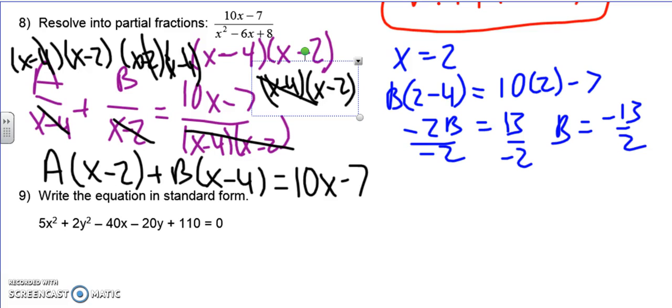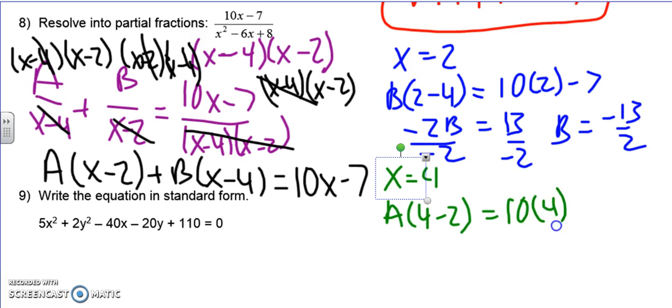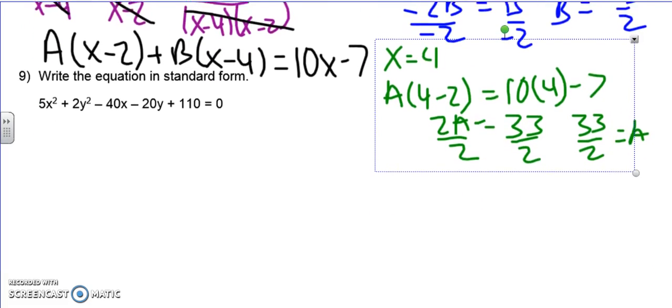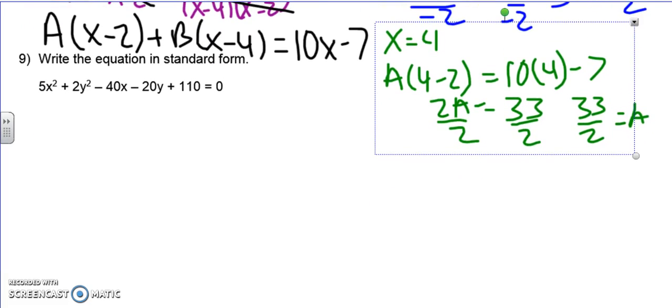All right, now to get a, I have to make x equal 4. So if I plug 4 in, I'm going to get a times 4 minus 2 equals, the b is going to cancel, 10 times 4 minus 7. So 2a equals 40 minus 7 is 33. Divide by 2. So I have 33 over 2. So that's great. Of course, I'm running out of room. Now I have to write my equation. So going back to the beginning.